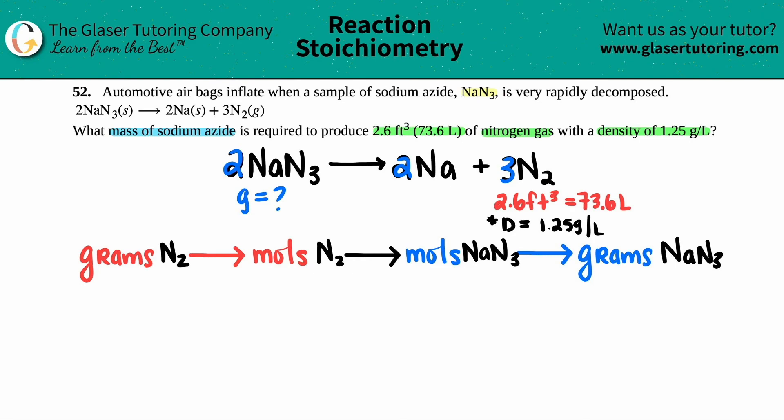But however, did they give me a gram value? No, they gave me a volume. They told me that I had 2.6 feet cube, which is a volume, and that equals the 73.6 liters. So how am I going to go to grams? Oh, they gave me the density formula. So in this case, I have to use the density, density with the liters.